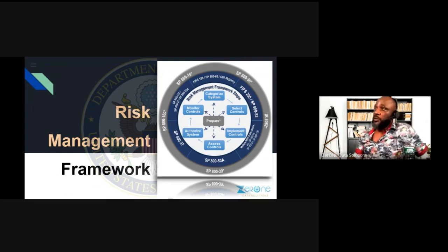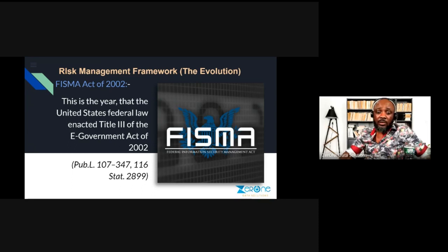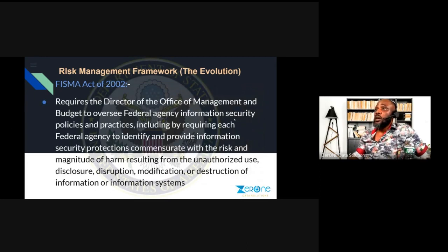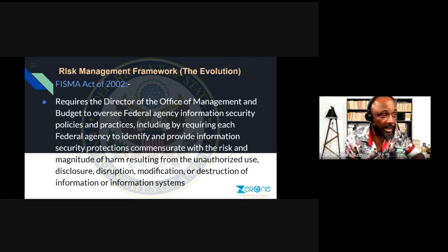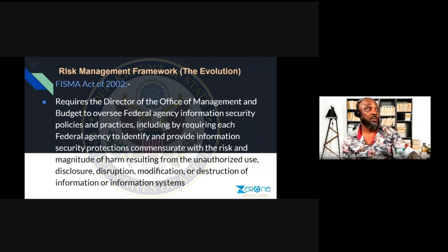Now, the Cybersecurity Risk Management Framework. This was instituted in 2002 when the United States federal government enacted Title II and Title III of the E-Government Act, Publication 107-347, known as the FISMA Act. The reason I'm touching on this is that some of you in the Virginia and North Carolina area may be getting government-related jobs, so you need to understand what FISMA is — and you will also see it on your exam.